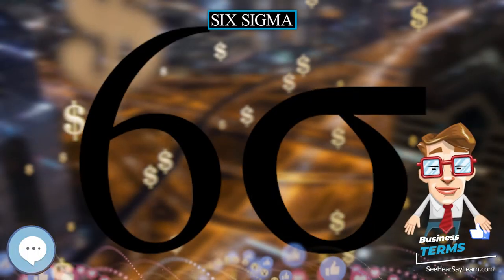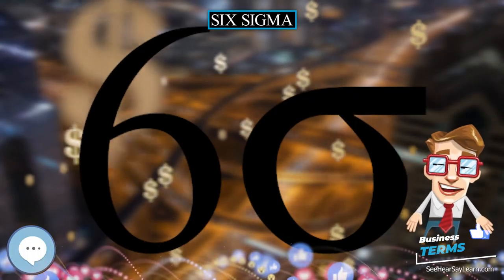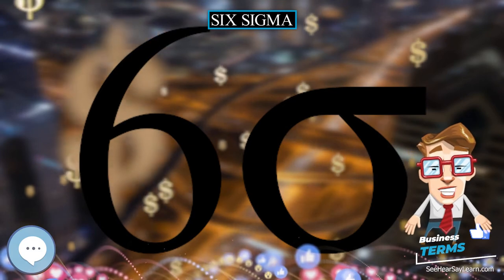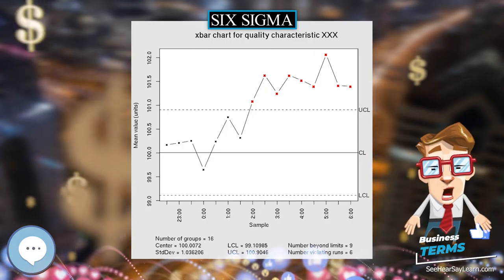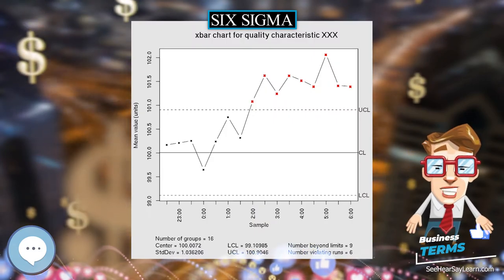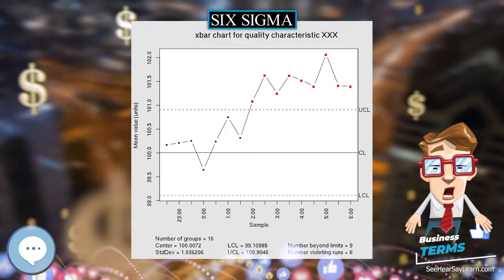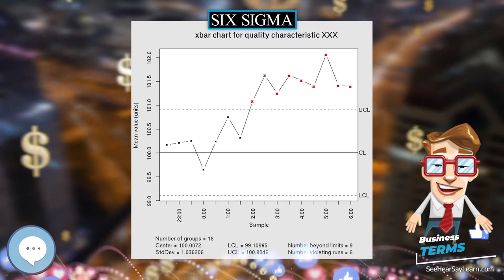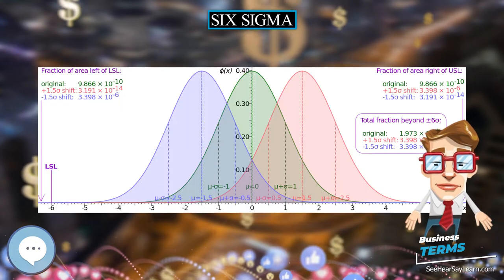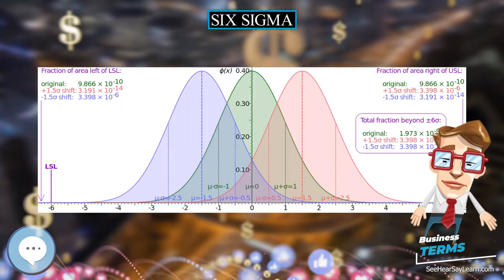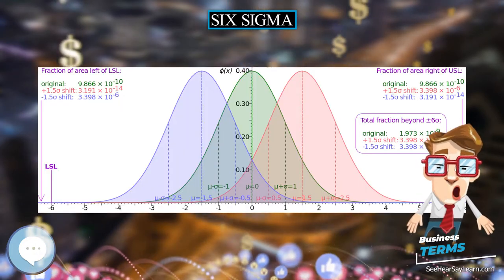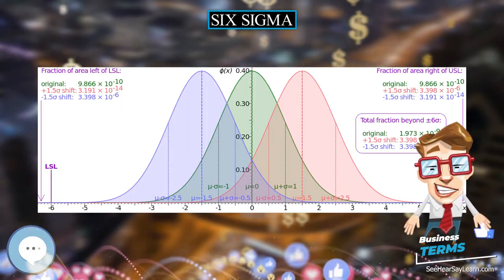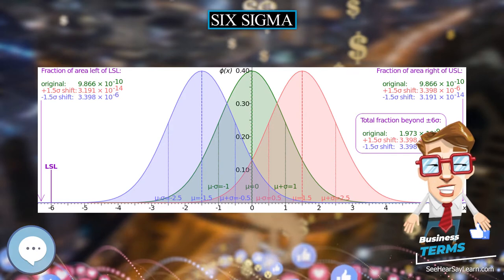Six Sigma is a set of techniques and tools for process improvement. It was introduced by American engineer Bill Smith while working at Motorola in 1986.